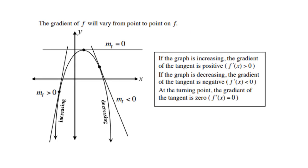If we look at the parabola, you will notice that if the graph is increasing, the gradient of the tangent is positive — that means the derivative is greater than zero. Remember, the derivative is the gradient at a point. If the graph is decreasing, the gradient of the tangent is negative, or the derivative is less than zero. And at the turning point, the gradient of the tangent is zero, or the derivative is equal to zero.